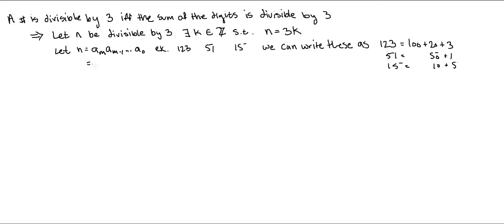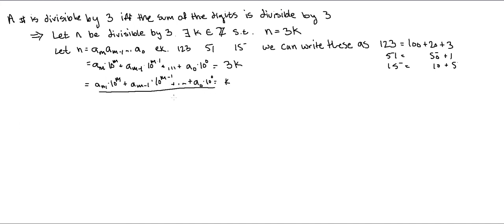We can write n as a_m times 10^m plus a_{m-1} times 10^{m-1}, plus all the way down to a_0 times 10^0, or just 1. Now we know that n is divisible by 3, so we're going to divide everything by 3. We look at 10^m over 3. Note that 10^n is 1 followed by n zeros, which we can write as n 9s plus 1.